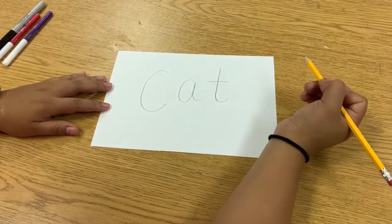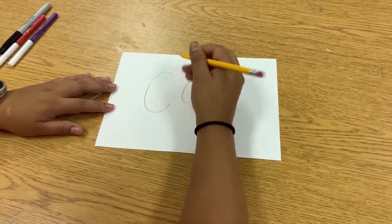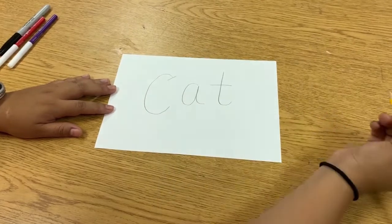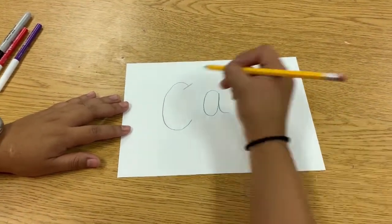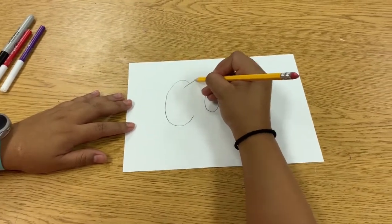So starting on the end of the top of my C, I'm going to draw a straight line. Now this line will determine how thick my letters are going to be and I want mine pretty big.